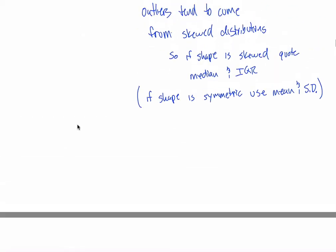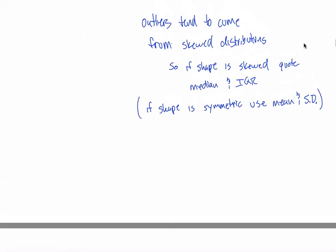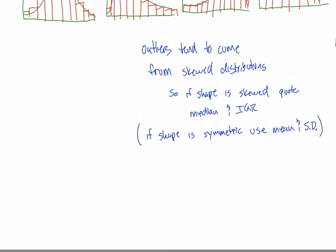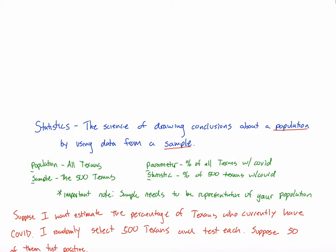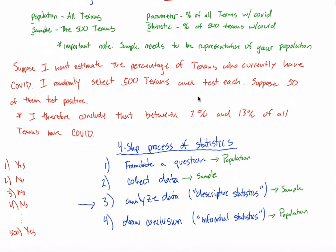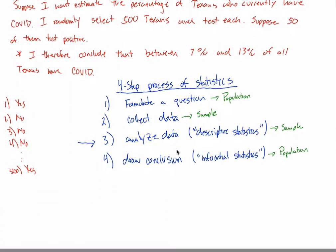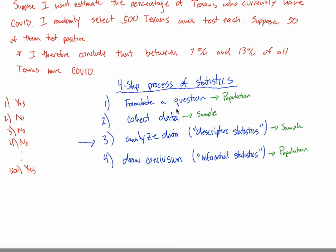Moving on to chapter three. I didn't forget chapter two. Chapter two deals with data and how to collect data, which is an important topic. But in an intro to statistics class, sometimes you have to pick and choose what you're going to be able to talk about. We just don't have enough time to talk about the second of our four steps in the four-step process of statistics, so we essentially just skip over it.